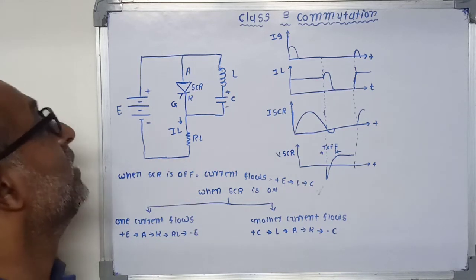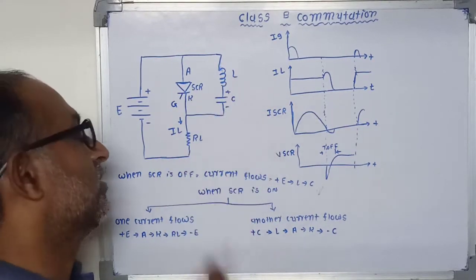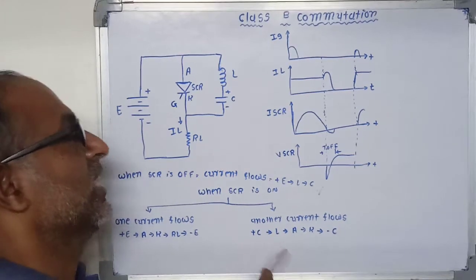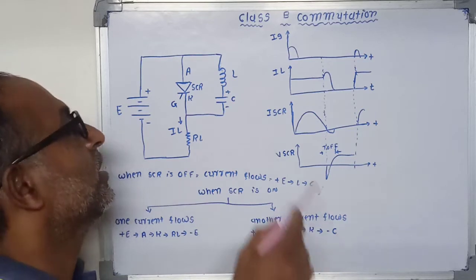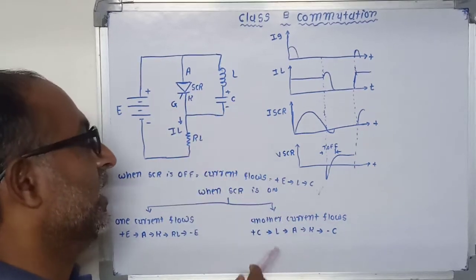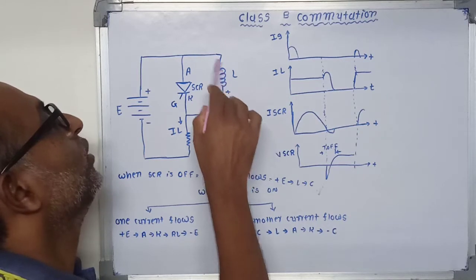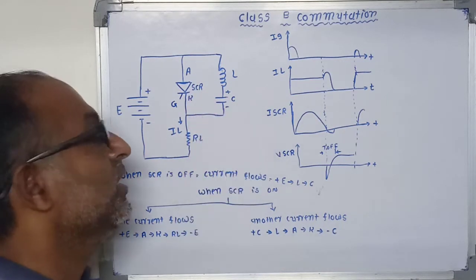When this SCR is turned on, another current passes through the LC circuit because the capacitor is fully charged. The capacitor starts to discharge through the SCR and its path is plus C to L to anode, cathode, and the negative terminal of the capacitor.